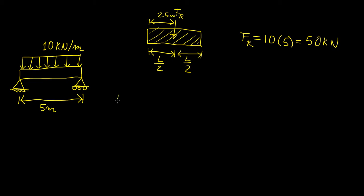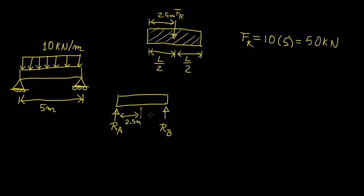If we now draw the free body diagram of this beam, we're going to have two reaction forces — let's call them Ra on the left and Rb on the right. Right in the middle we're going to have our resultant force, 2.5 meters from one side and 2.5 meters from the other. This resultant force comes from the uniformly distributed load and has a value of 50 kilonewtons.